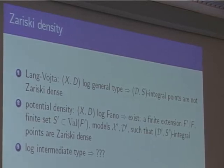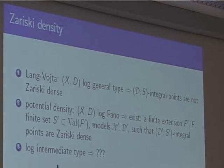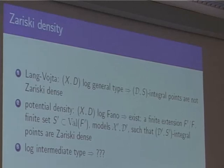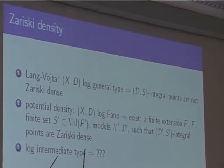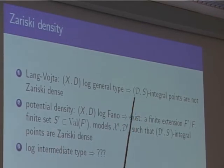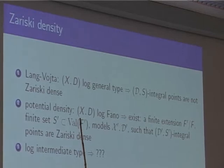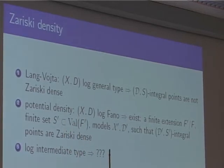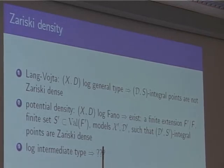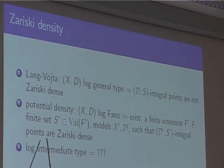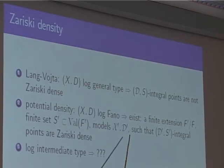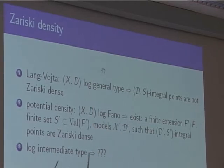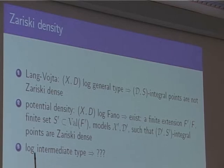What is potential density for integral points? First, we want to allow finite extensions of the ground field — there are examples where Fano varieties over the rationals have no points at all. There are similar obstacles here: you need rational points first, and once you pass to a finite extension you may also want to enlarge the set of places S, because some bad prime can force the reduction of your boundary to absorb all points. Once you enlarge S to a finite set S', you would want S'-integral points on some model of (X, D) over that extension to be Zariski dense.